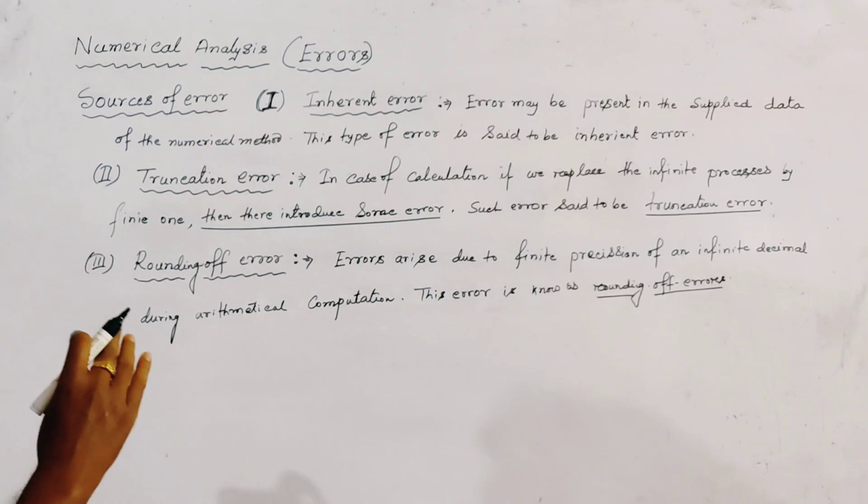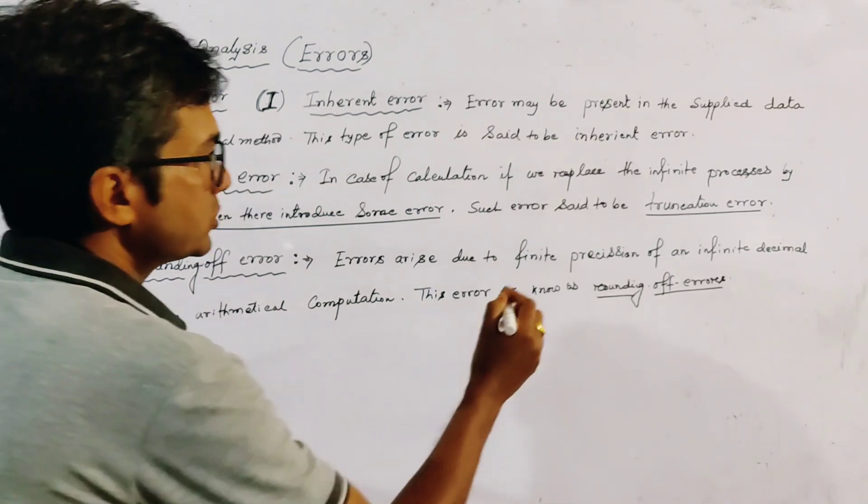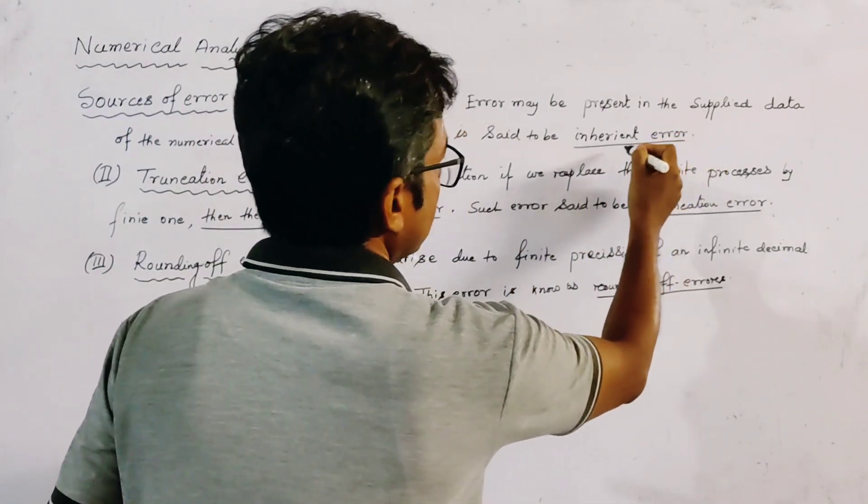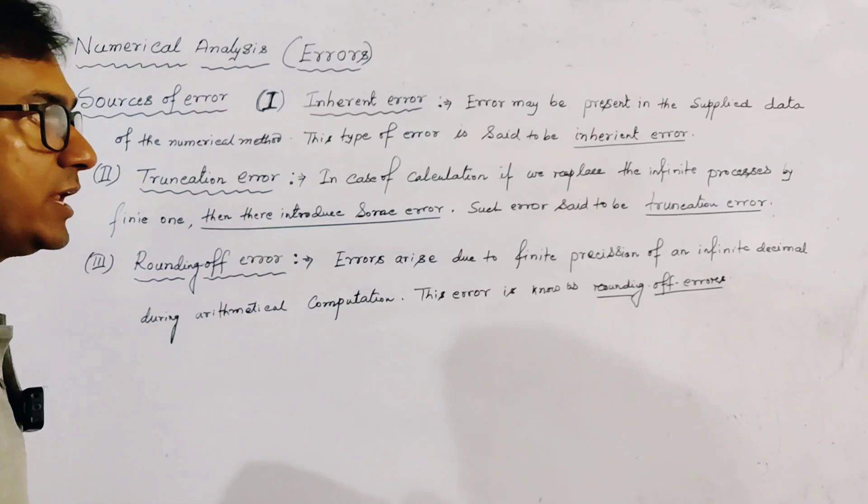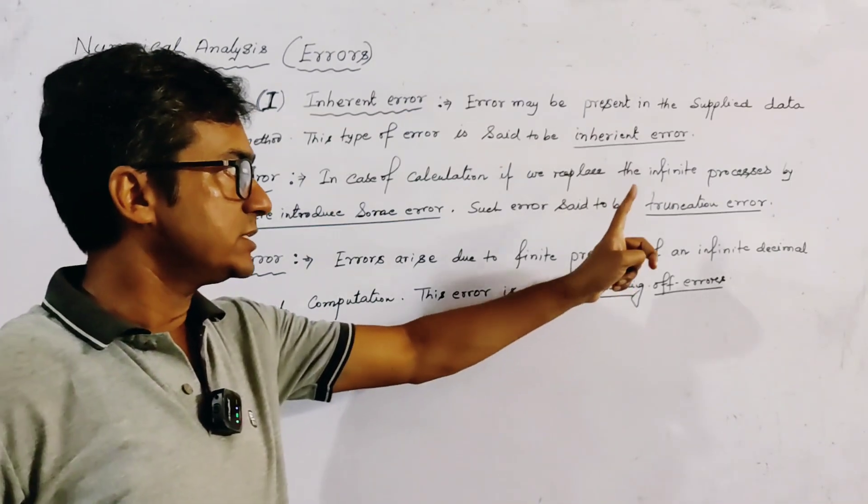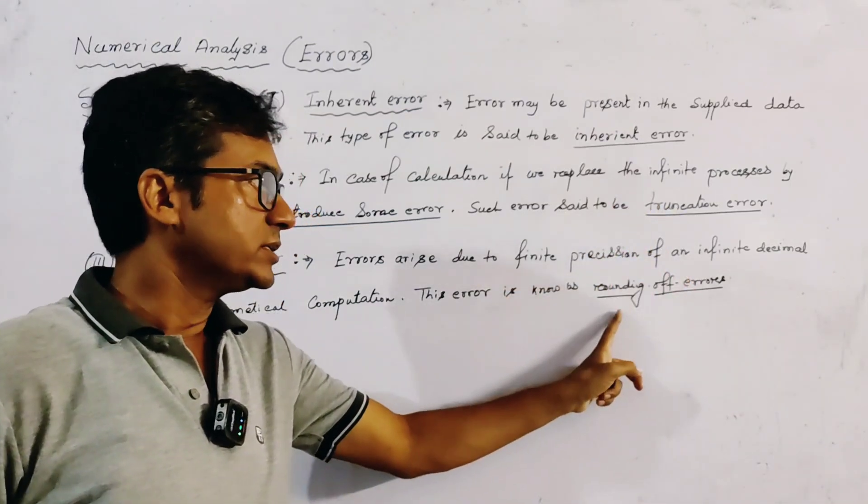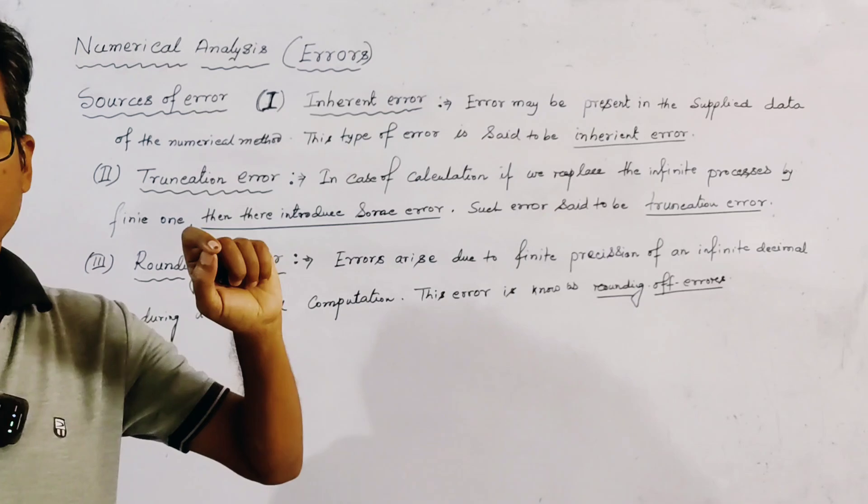So we get here three sources of error. The first source is inherent error, the second is truncation error, and the third is rounding of error.